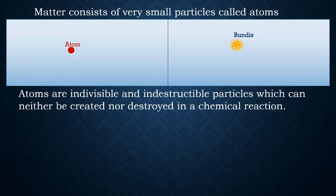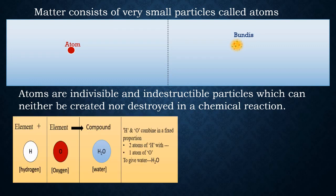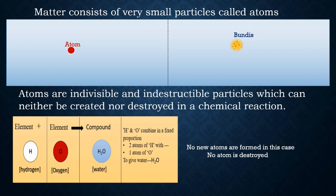The second postulate states that atoms are indivisible and indestructible particles which can neither be created nor destroyed in a chemical reaction. Atoms are like fundamental units — dividing them further is not possible. In a chemical reaction, atoms may combine to form new units. For example, hydrogen atoms combine with oxygen to form water H2O. In this reaction no new atoms are formed and no atom is destroyed.